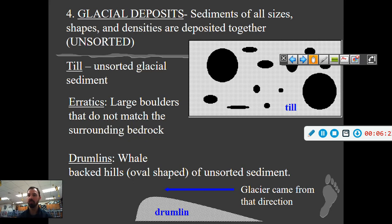Drumlins are whale-shaped hills or whale-backed hills—oval-shaped mounds of unsorted sediment. The glacier comes from the side that's higher up. It drops a lot of sediment at first and then runs out. Always the big mound is where it came from, and the smaller side is where it's running out of sediment. We can use this to know which way the glacier went through the area.